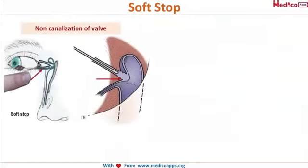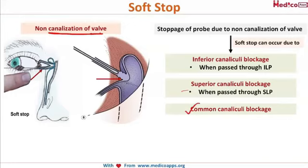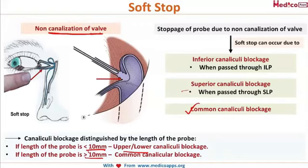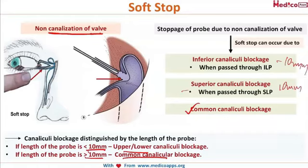To differentiate whether the soft stop is in the common canaliculus or the upper/lower canaliculi, recall that the canaliculi are 10 mm long. If you encounter a soft stop at less than 10 mm, the block is in the upper or lower canaliculus. If you cross 10 mm and then experience the soft stop, the blockage is in the common canaliculus.